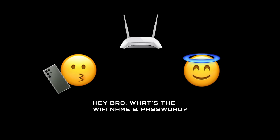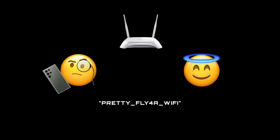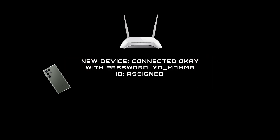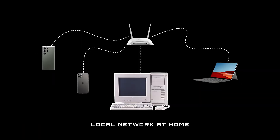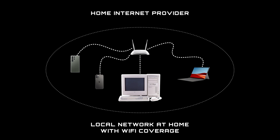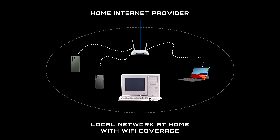We'll start with an example you should be familiar with: connecting to Wi-Fi. When you connect your phone to a Wi-Fi router for the first time, you normally search for the SSID of the router and then enter your password. In the background, the router confirms your details and assigns an ID to your phone so it can identify it from everything else connected to the Wi-Fi. The phone is now part of a local network, which is like a bubble where the internet from the outside world enters your home through the router, which it then distributes to your phone and other devices.